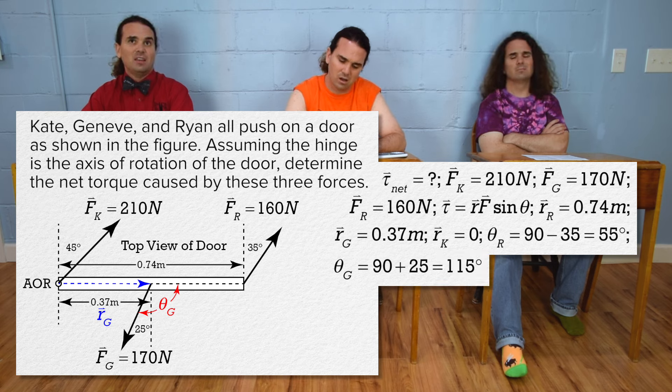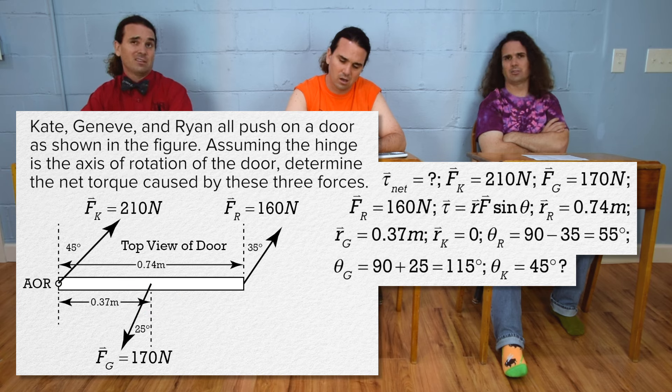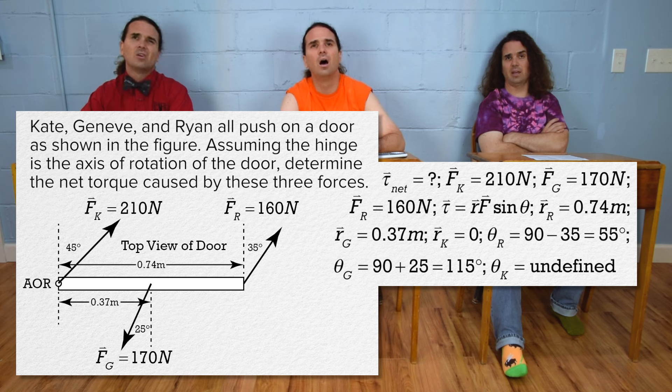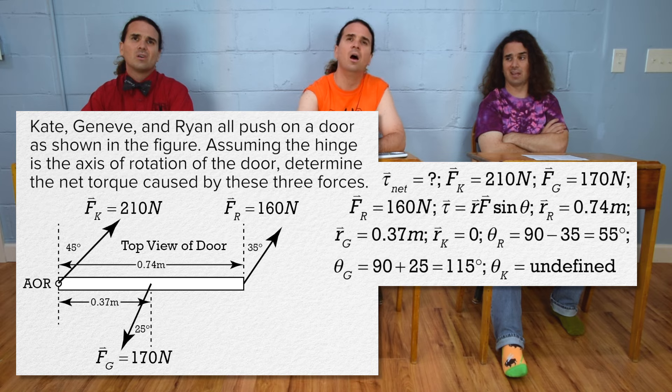And theta for Kate is 45 degrees? Actually, the angle for Kate is undefined. The r for Kate is zero and therefore has no direction. Therefore, we cannot define Kate's theta.